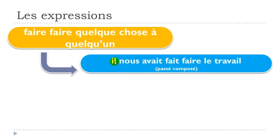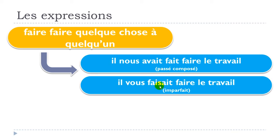For past tenses: il nous avait fait faire le travail — this is the plus-que-parfait, with the pronoun nous for first person plural. For the imparfait with second person plural vous: il vous faisait faire le travail.